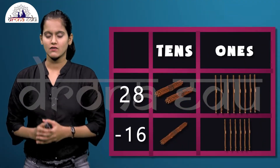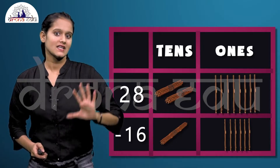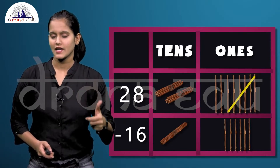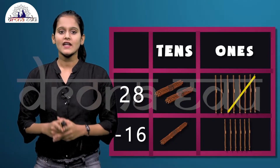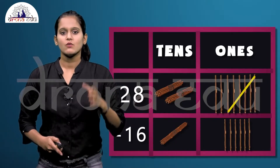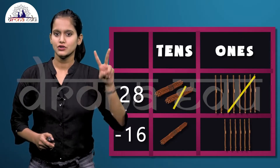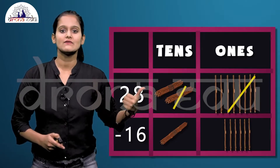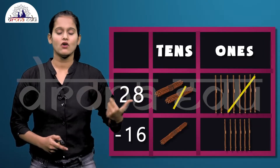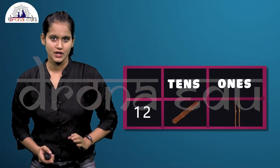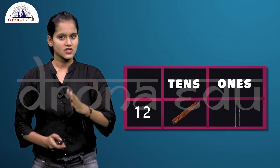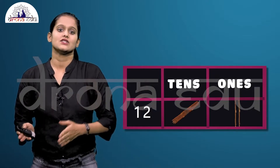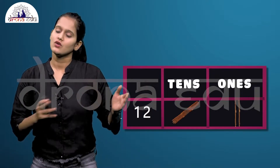We need to take out those 16 damaged sticks out of 28. In the ones place, six sticks are subtracted from eight, giving a difference of two. In the tens place, one bundle is subtracted from two, giving a difference of one. So the undamaged sticks are one bundle and two individual sticks, which means 10 plus 2 equals 12 sticks.